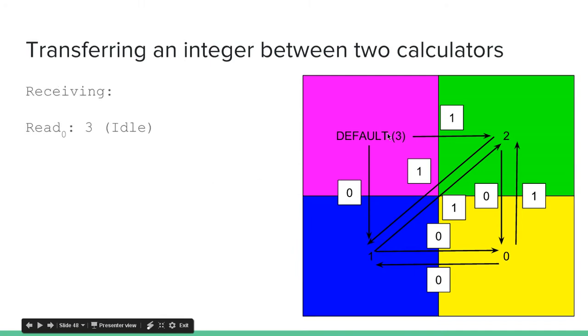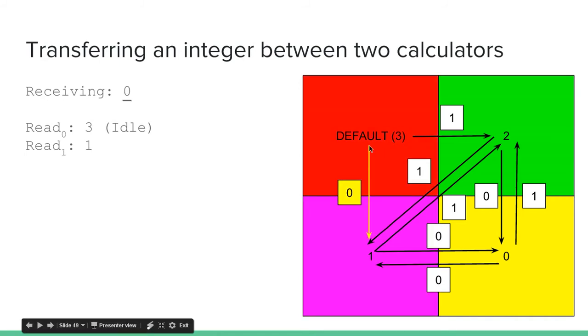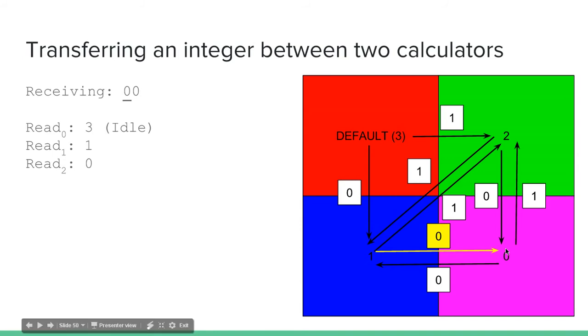Now on the receiving end, we're going to be reading the value 3, and then we're going to read the value 1, which is defined as a 0, and we're going to read the value 0, which is defined as a 0.